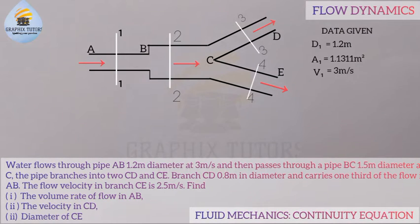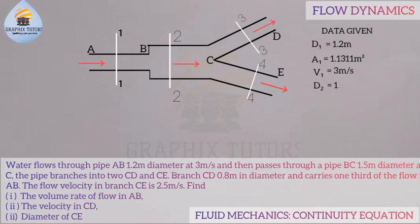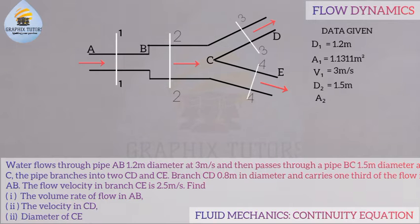Similarly, for section BC which is section 2, the diameter is given as D₂ = 1.5 meter. We calculate the area: A₂ = π D₂² / 4 = 3.142 × (1.5)² / 4, which gives the value you can see on the screen.